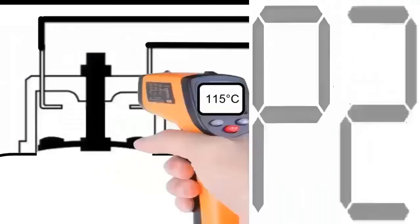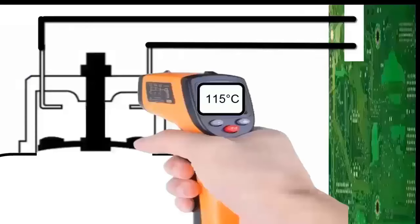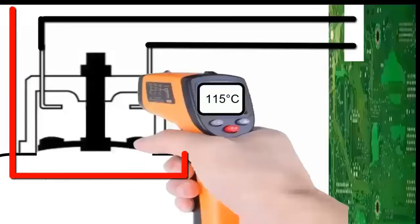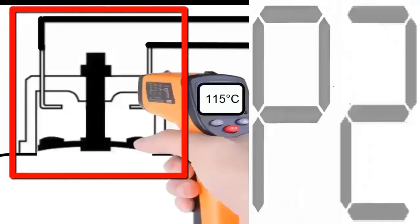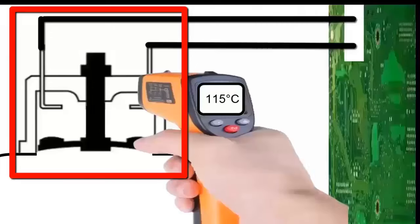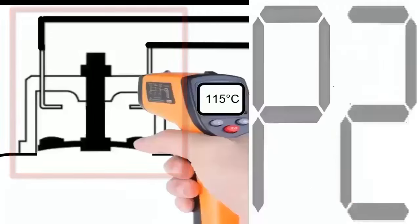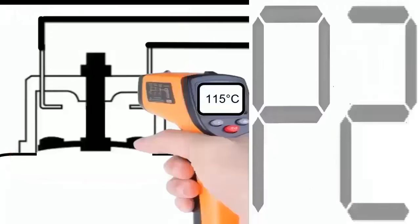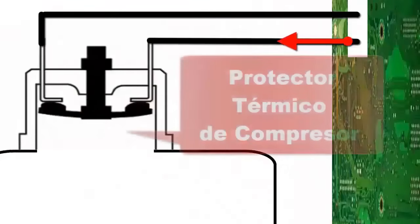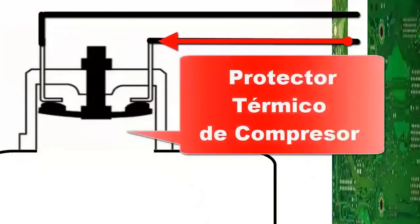6. False overload alarm. If the current measured in step 1 is normal, the system might be detecting a false overload alarm. In this case, there could be an issue with the compressor overload switch. Try temporarily bypassing the switch to see if the error disappears.